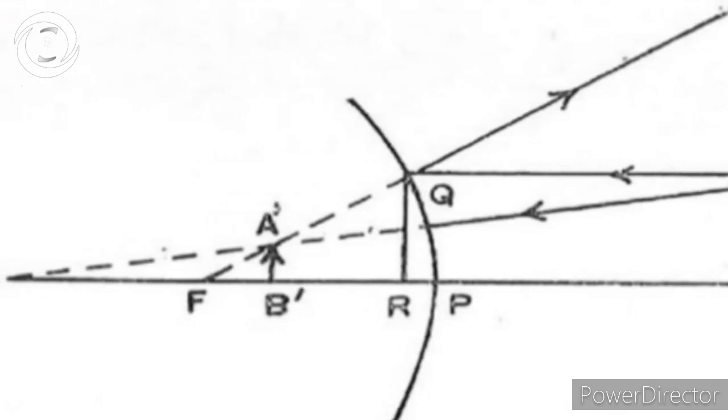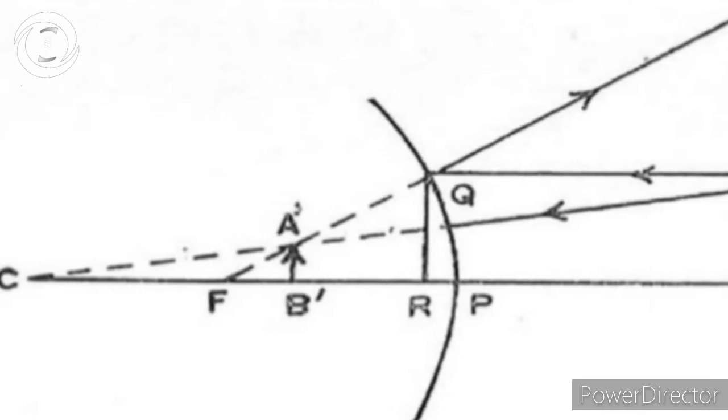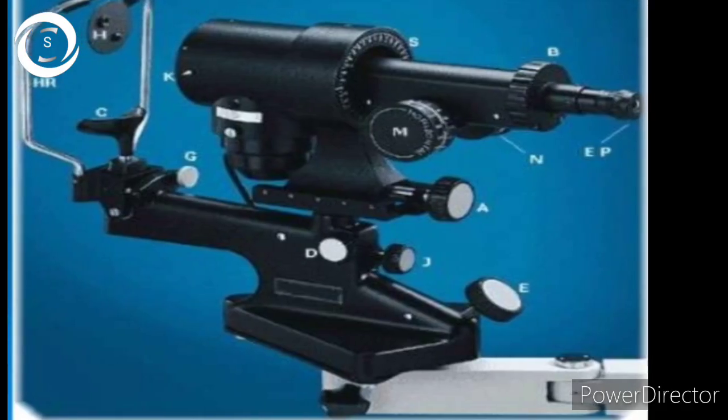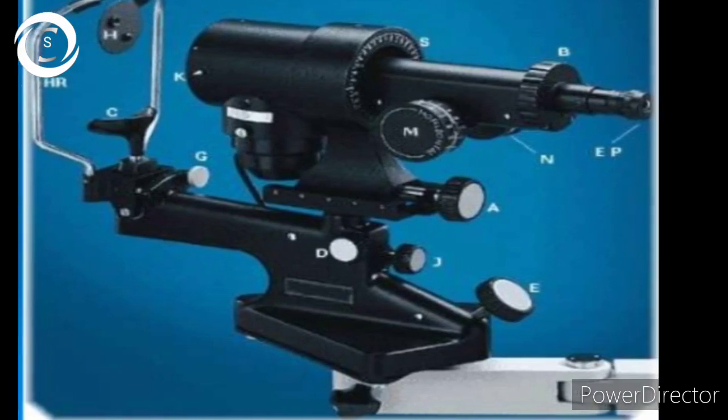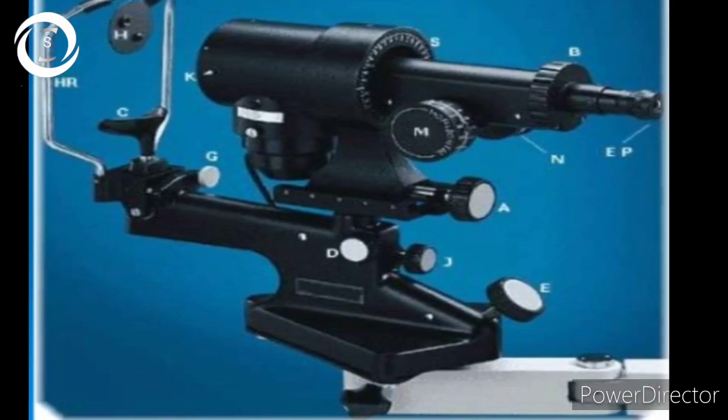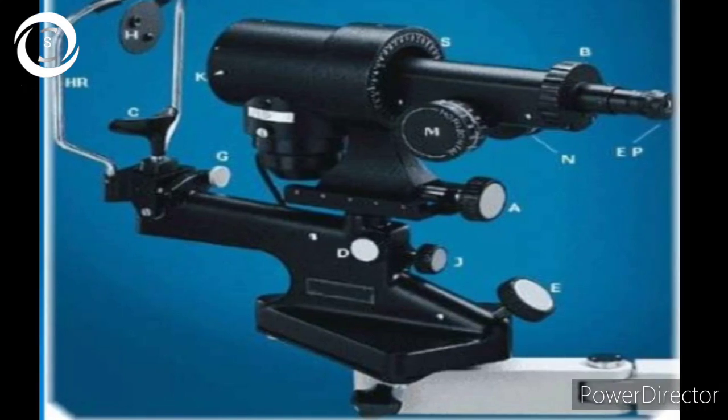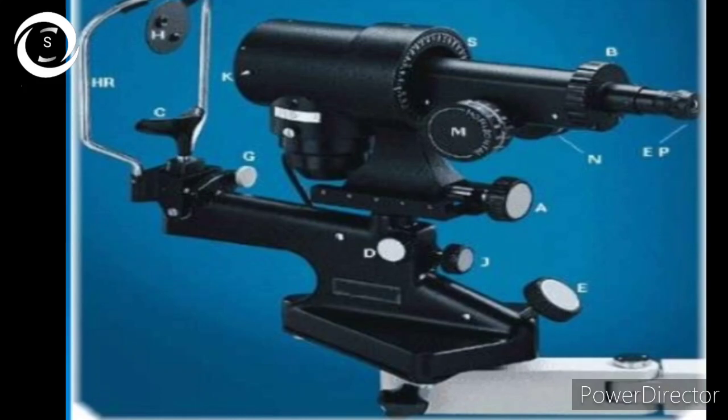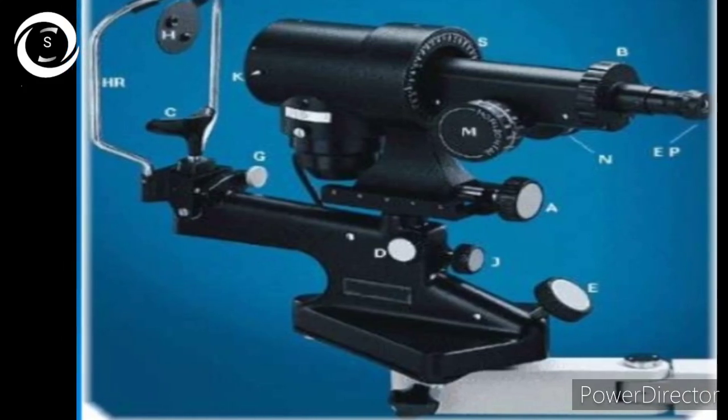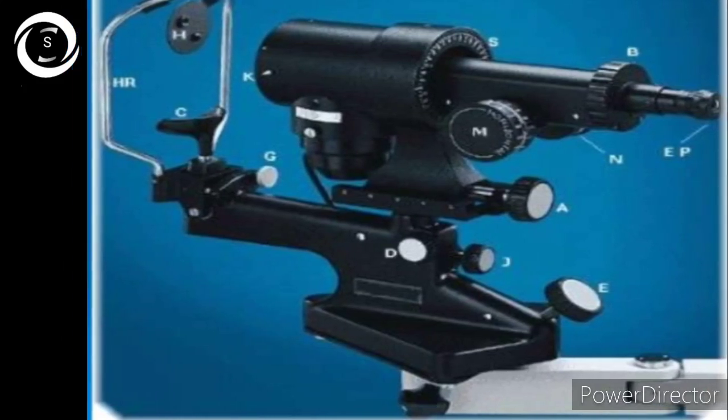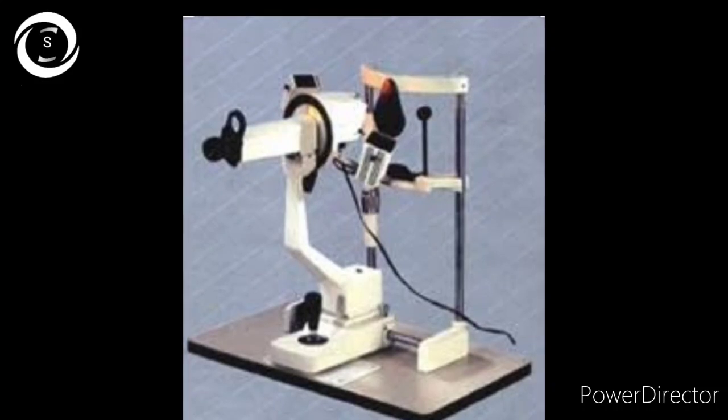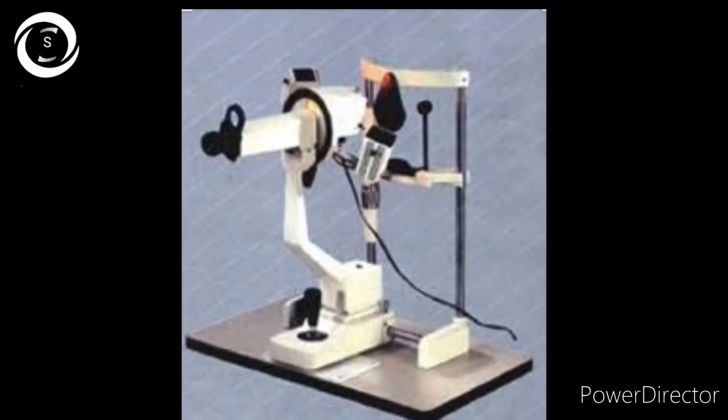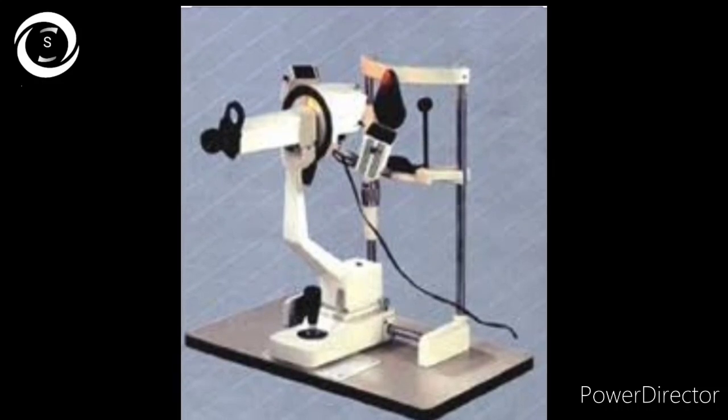Keratometers are based upon two concepts of doubling. Fixed object size with variable image size is called variable doubling and occurs in Bausch and Lomb keratometer. In Javal-Schiotz keratometer, you have fixed image size with variable object size.